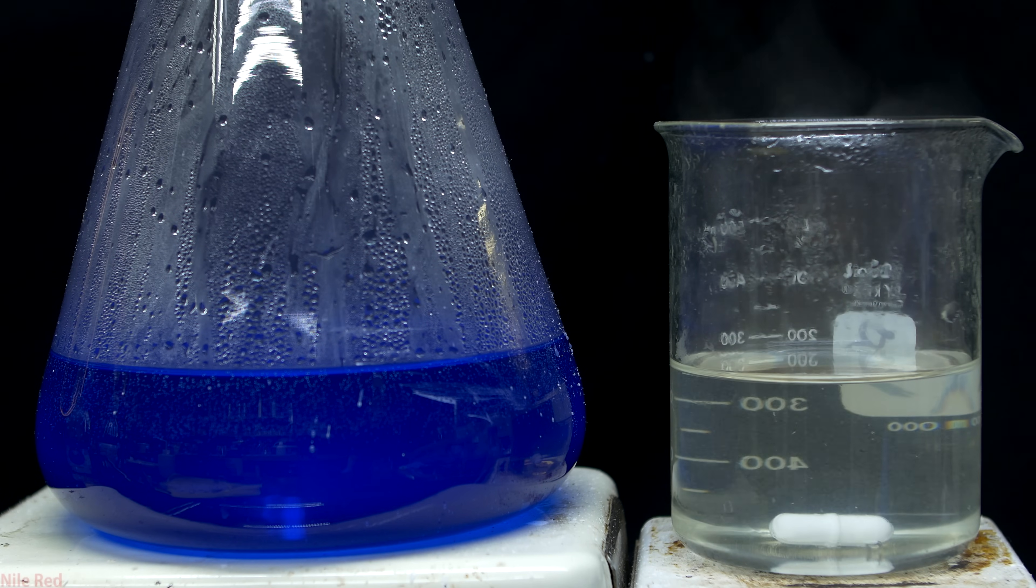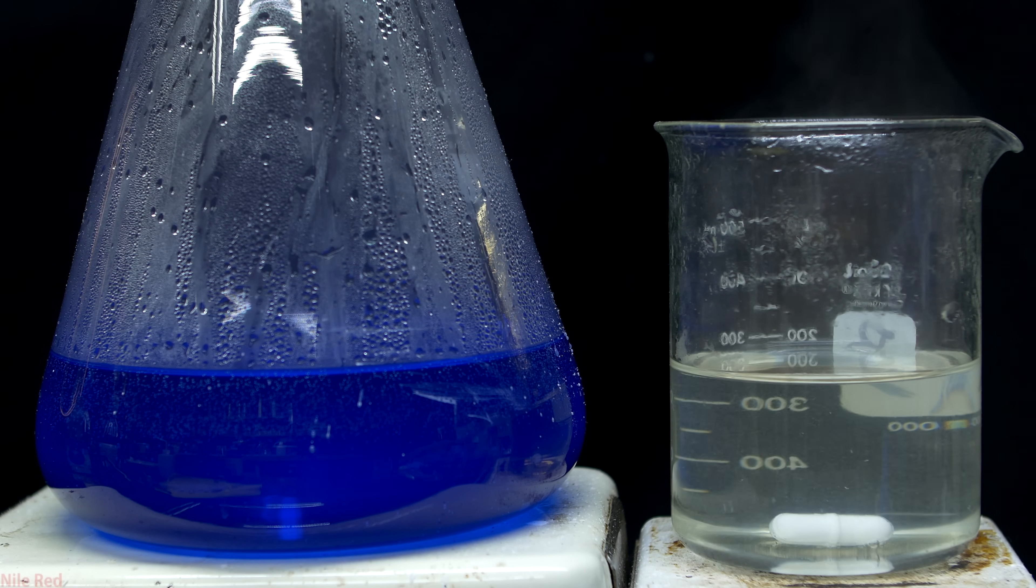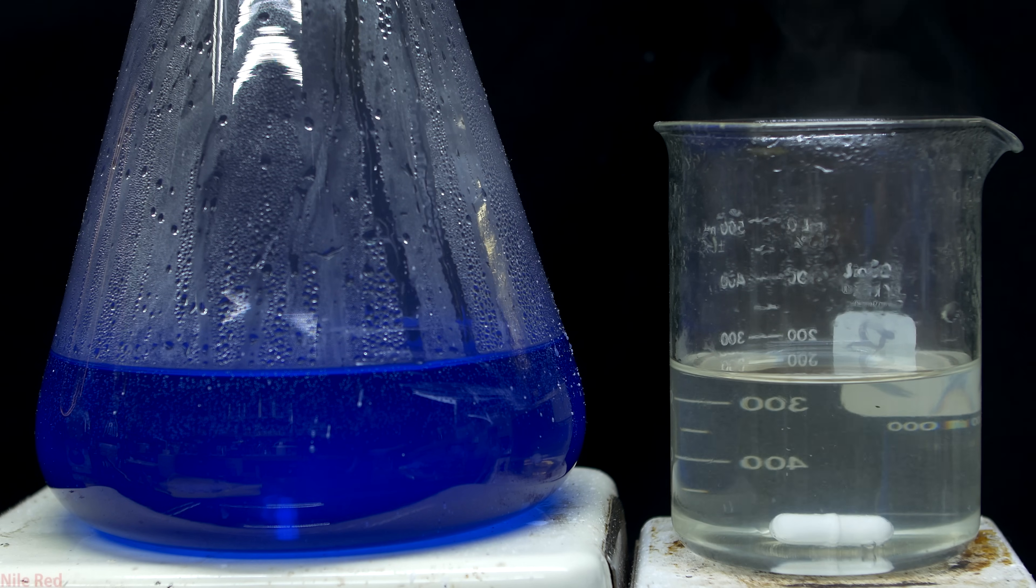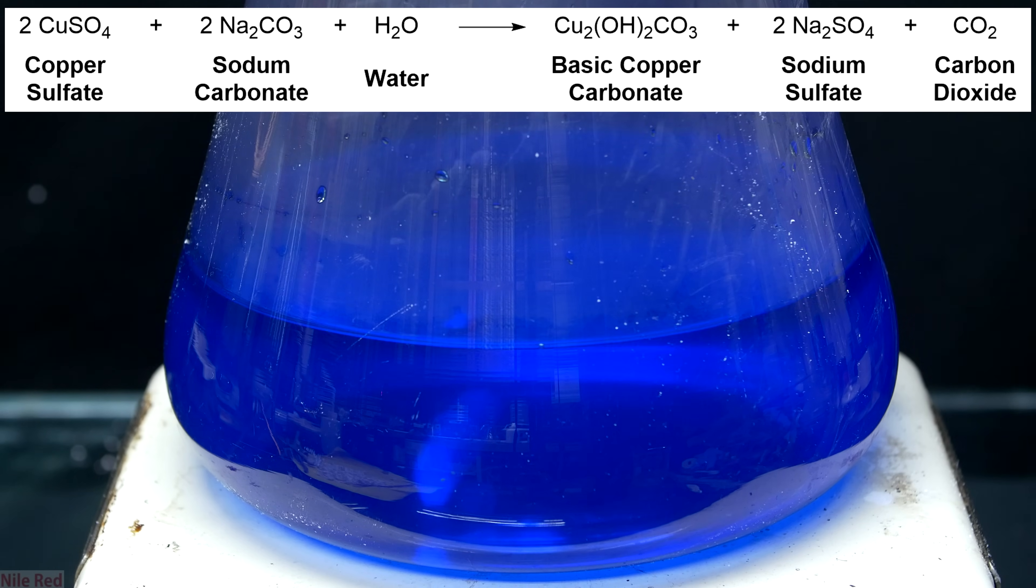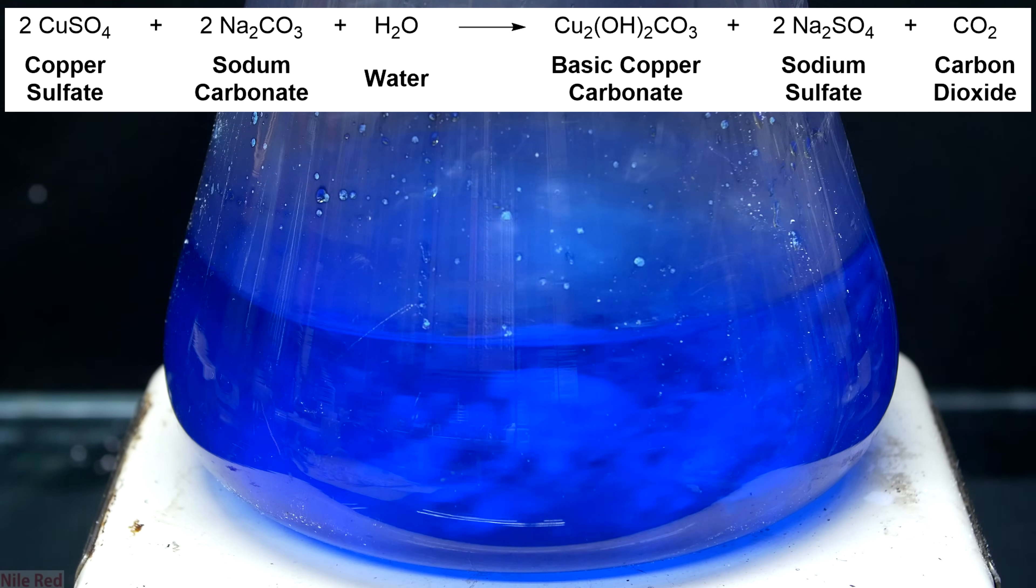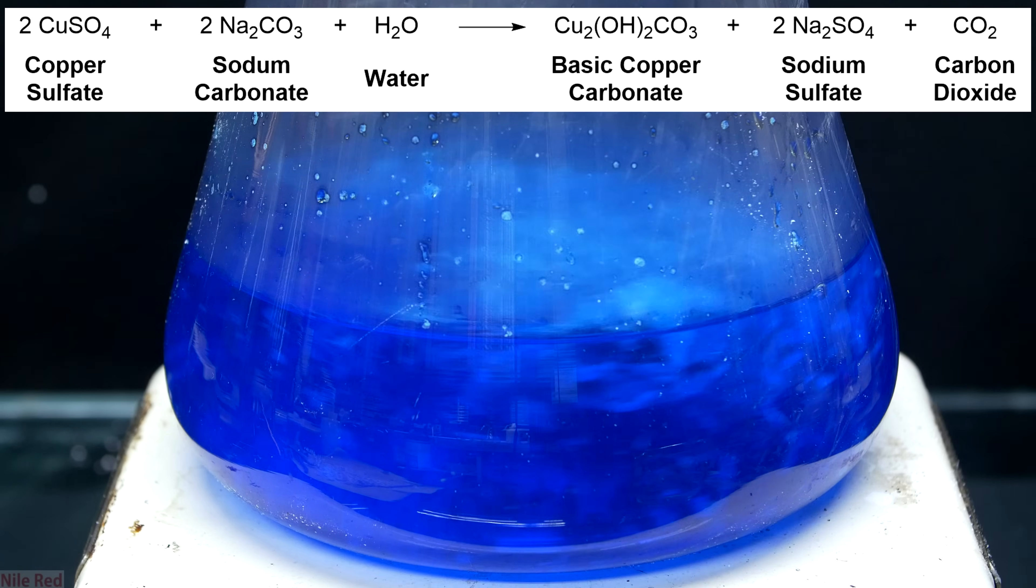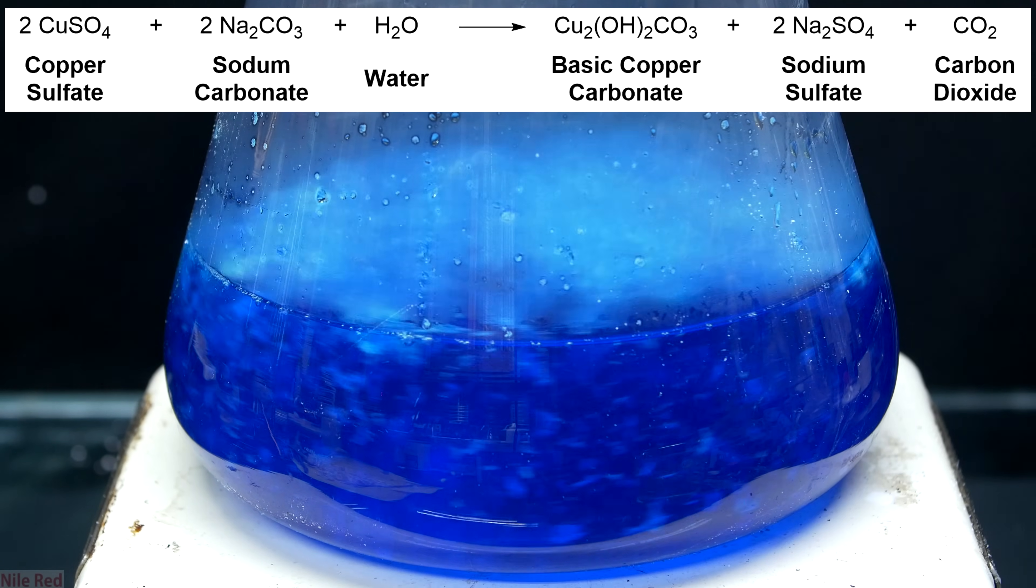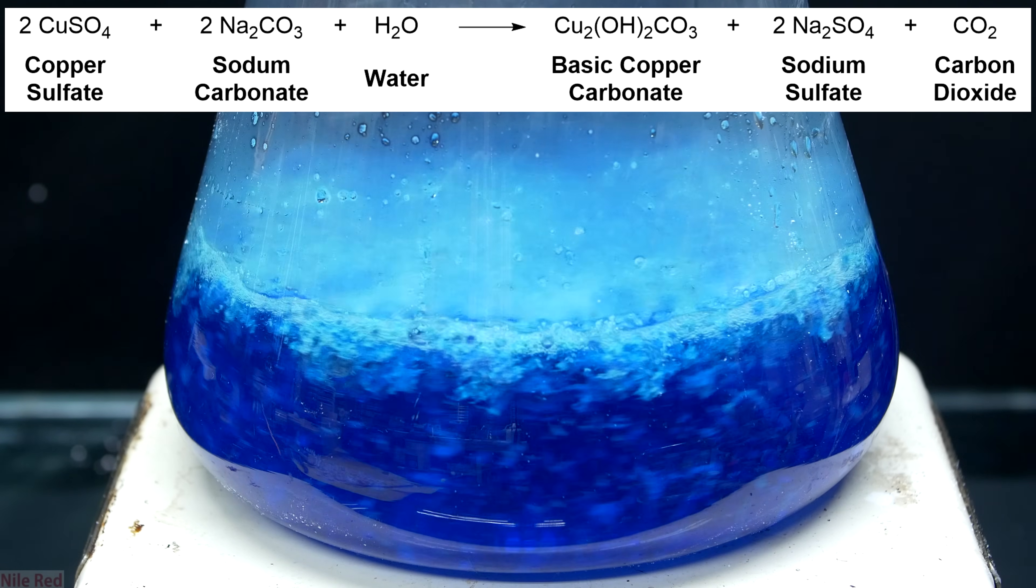The next step in this preparation is very simple. All we do is we pour the sodium carbonate solution into the copper sulfate solution. The moment the sodium carbonate solution hits the copper sulfate solution, a precipitate appears. A very nice light blue precipitate floats to the surface and a lot of bubbling occurs.